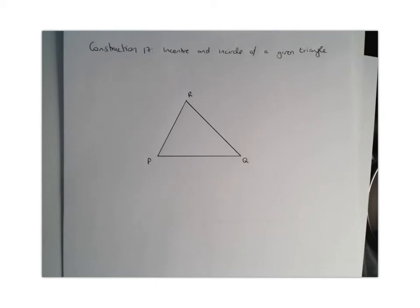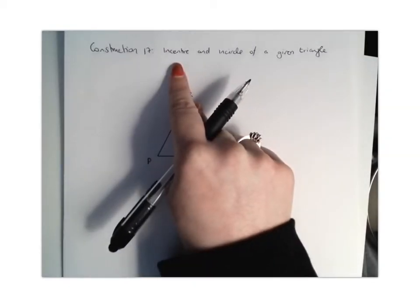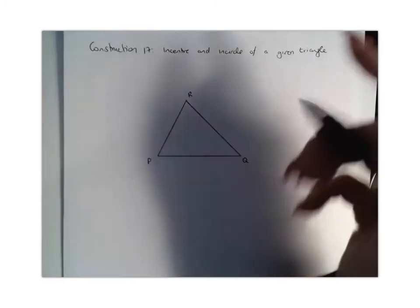So the in-circle of a triangle is a circle inside a triangle and each of the sides of the triangle is a tangent. And then the in-center is the point where the triangle's three angular bisectors intersect.